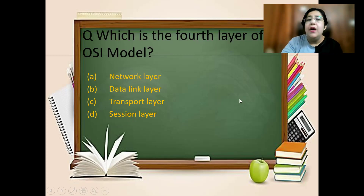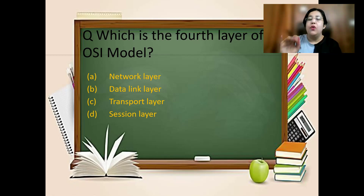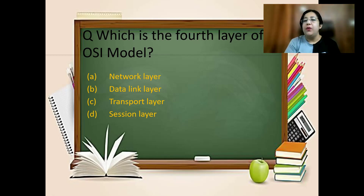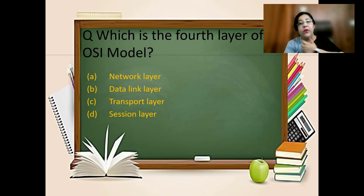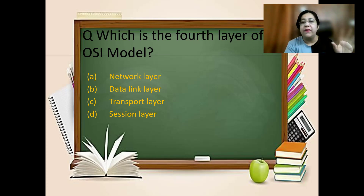Next question: which is the fourth layer of the OSI model? In the OSI model, when we make computer networks, we make an open system interconnection model. The whole network is divided into layers, which we have studied in computer networks lectures.